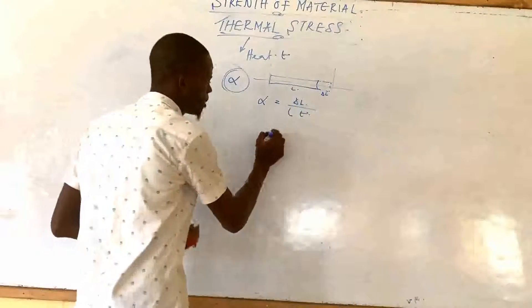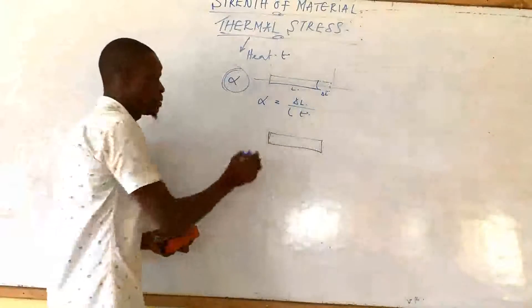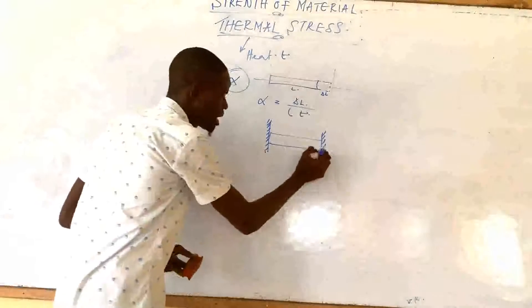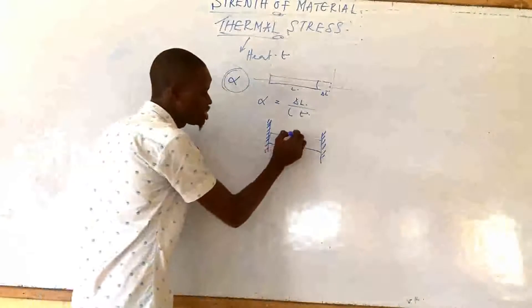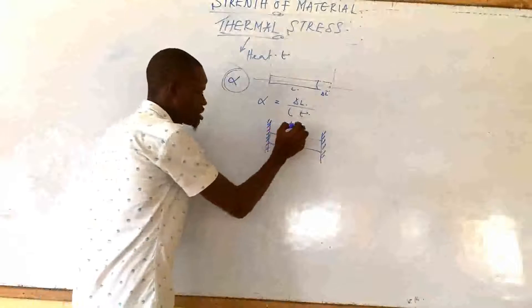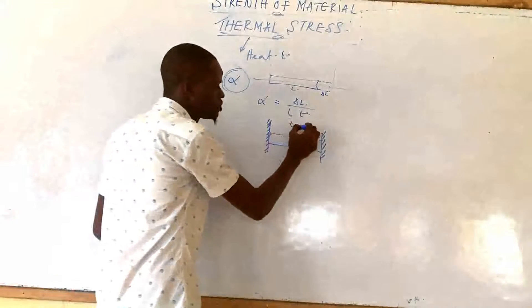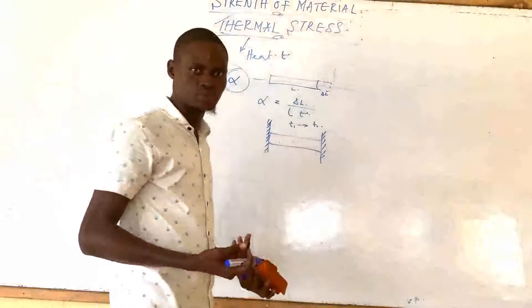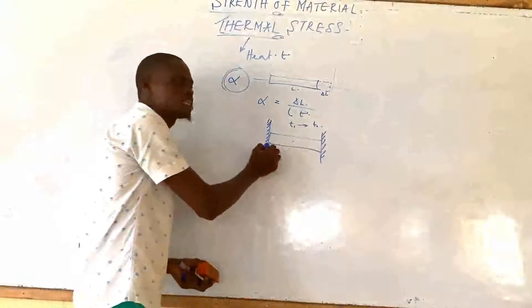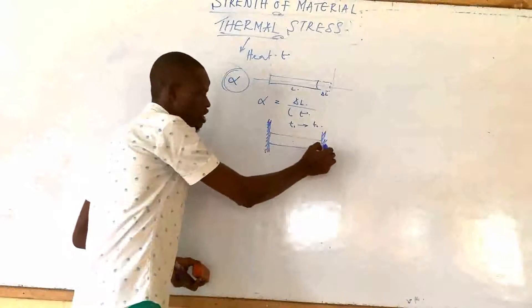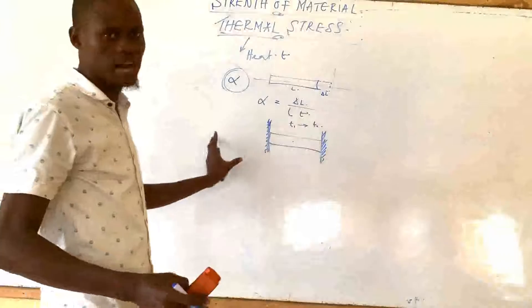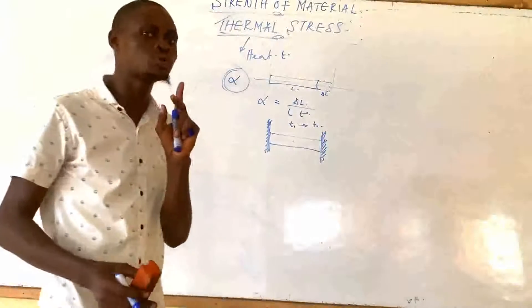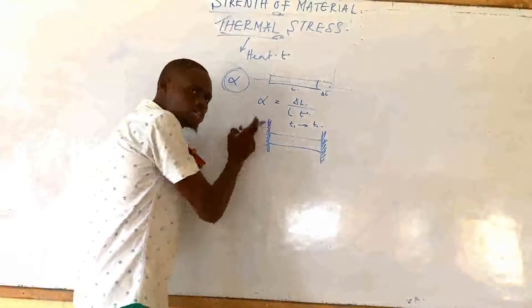Now how can we induce stress in a member? For instance, if I have a bar member that is fixed at both ends — the bar is fixed at this end here — normally if the initial temperature of this bar is T1 and I increase the temperature to T2, the bar will tend to expand due to the change in temperature. But this expansion will be affected by the fixed region, which will tend to compress the bar back.